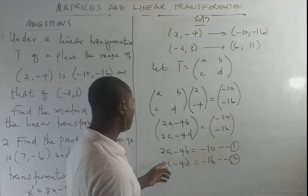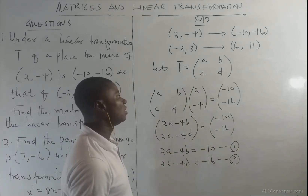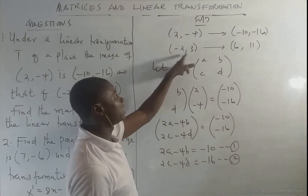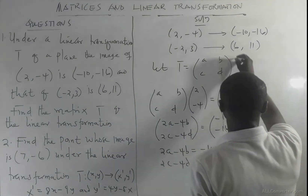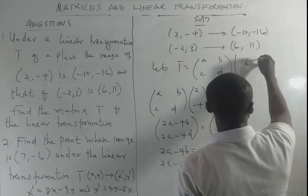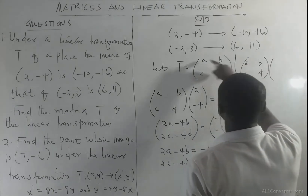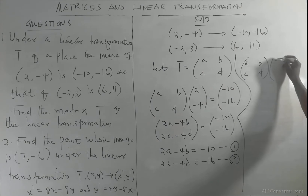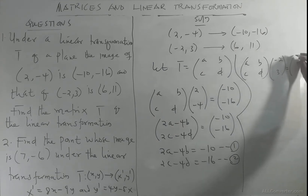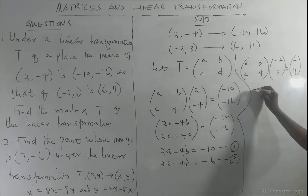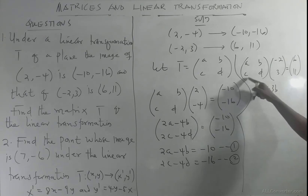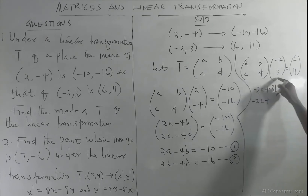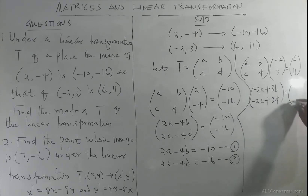Note that equation 1 is in terms of a and b, and equation 2 in terms of c and d. We also multiply the same matrix by the second point (-2, 3) and equate to its image (6, 11): a times -2 gives -2a, b times 3 gives 3b; c times -2 gives -2c, d times 3 gives 3d.